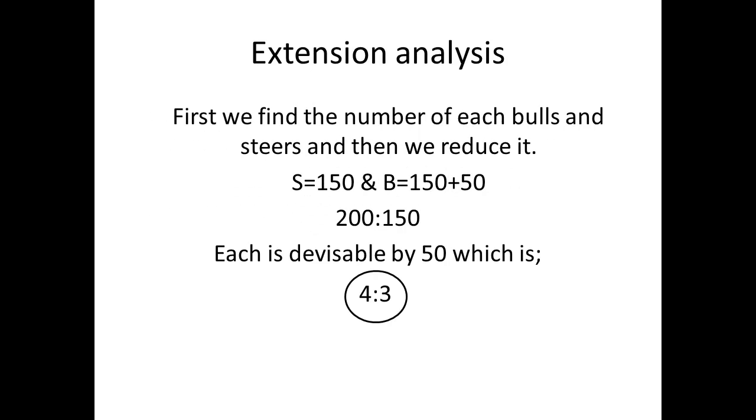Our extension analysis is: first we find the number of each bulls and steers and then we reduce it down. The number of steers are 150 and the number of bulls are 200. Then we must reduce it by 50, which gives us 4 to 3.